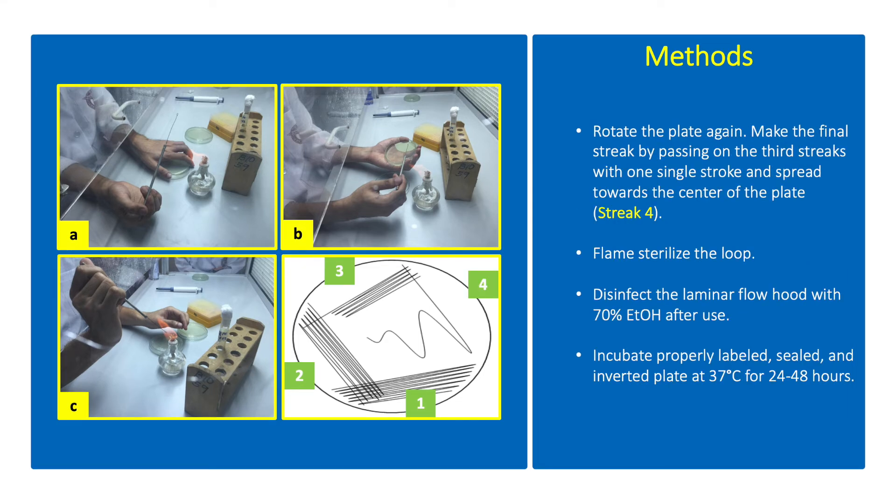Rotate the plate again. Make the final streak by passing on the third streaks with one single stroke and spread towards the center of the plate. Then flame sterilize the loop.